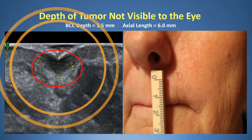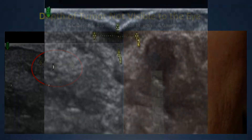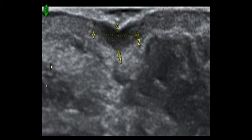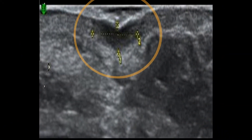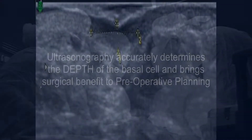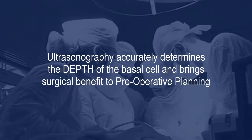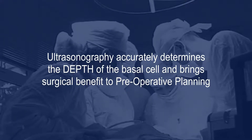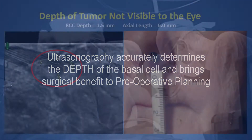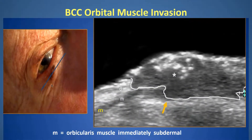Here, we can identify the tumor as black under ultrasound. The important thing about this basal cell is that you can see the depth, which makes the difference between a 5-minute excision or a 5-hour Mohs surgery. This helps the surgeon preoperatively to determine how deep the tumor is, and also sometimes even how aggressive it is. We can see both the depth and the aggression in this view.